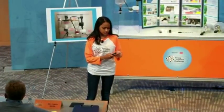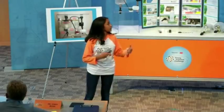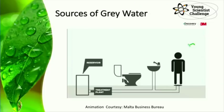Here is a simple illustration of how gray water can be reused and collected in toilets. Water from sinks and showers can be filtered, stored, and reused in toilets. Other examples of gray water include water from washing machines and dishwashers.